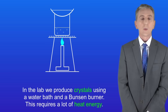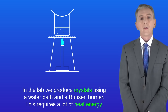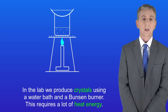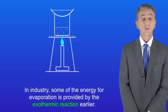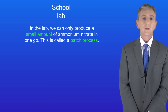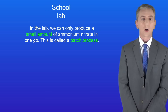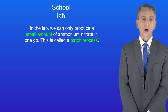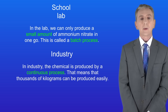In the lab we produce crystals using a water bath and a Bunsen burner, which requires a lot of heat energy. However, in industry some of the energy for evaporation is provided by the exothermic reaction seen earlier. Finally, in the lab we can only produce a small amount of ammonium nitrate in one go — this is called a batch process. In industry the chemical is produced by a continuous process, meaning that thousands of kilograms can be produced easily.